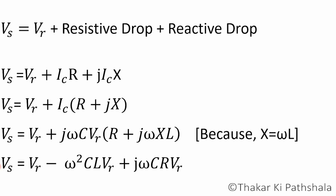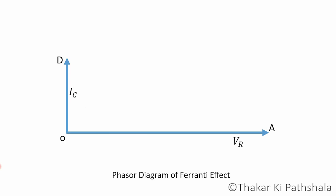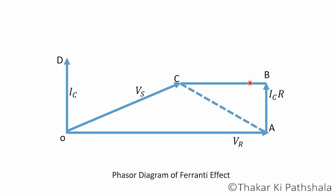So we can draw the phasor of the sending end voltage. The drop due to line resistance and charging current is shown by AB, but it is very low and can be neglected. From the phasor diagram, we can clearly see that the phasor of the receiving end voltage is larger than the phasor of the sending end voltage. If you have any doubts or suggestions for a topic to cover in the next video, comment below and share it with your friends.